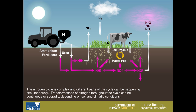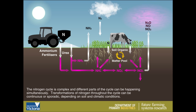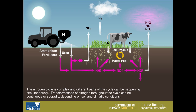The nitrogen cycle is complex and different parts of the cycle can be happening simultaneously. Transformations of nitrogen throughout the cycle can be continuous or sporadic depending on soil and climatic conditions.